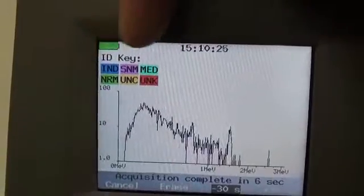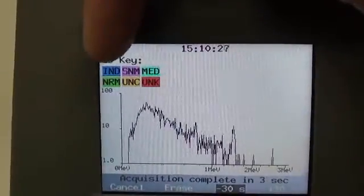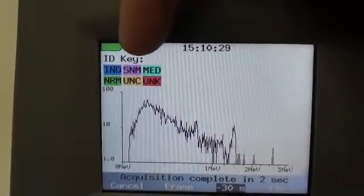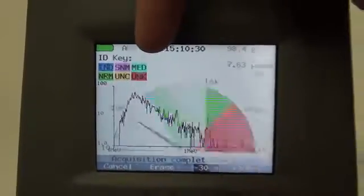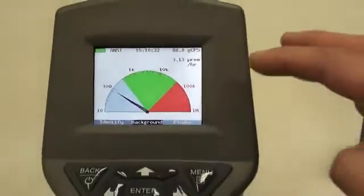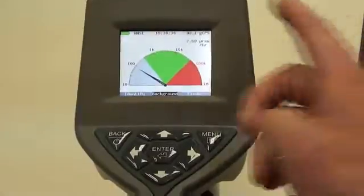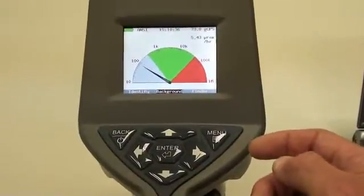At the top of the screen you see various color charts. Blue is for industrial, purple is for special nuclear material, and red is for medical radioisotope. So that's the background calibration done, and you return back to the main display screen.